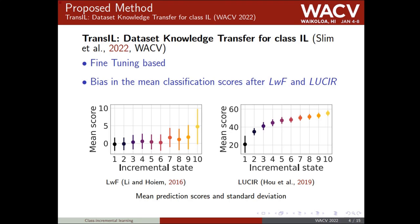In this paper we propose TransIL, a fine-tuning based method that we can apply on top of other class incremental methods to improve their performance. In these two figures, we plot the mean prediction scores and standard deviation in each incremental state from one to ten of two methods from the state of the art, namely Learning Without Forgetting and LUSIR.